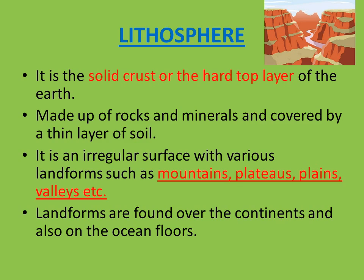Lithosphere refers to any type of land. It is the solid crust or hard top layer of the earth, made up of rocks and minerals and covered by a thin layer of soil. It is an irregular surface with various landforms such as mountains, plateaus, plains, valleys, etc. These different landforms have different kinds of surface areas.